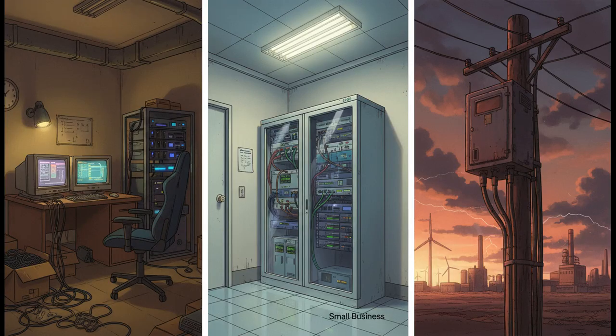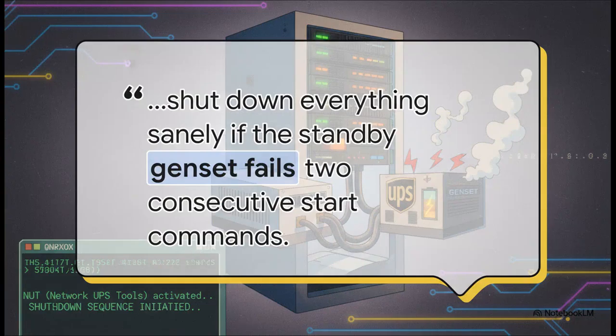A massive chunk of the Proxmox user base is made up of home lab enthusiasts, small businesses, and people running remote edge servers. For them, a simple power flicker can be an absolute disaster if there isn't a way to shut down gracefully. Some users depend on NUT to automatically and safely shut everything down if their backup generator fails to start. This isn't just about surviving a quick power outage — it's about having an intelligent, automated system to prevent catastrophic data corruption.